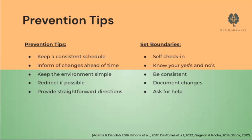Sitting down with your loved one and determining a daily schedule can bring them a sense of accomplishment and clarity. Once established, place the schedule in a common area like the kitchen or on their smartphone calendar where they can also get reminders of what they need to do on a daily basis. If you're aware of any short-term changes to their schedule, let them know prior or earlier during the day, as sudden unannounced changes may trigger upset.